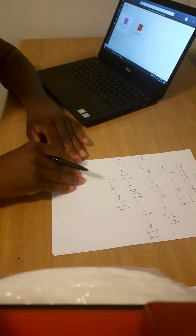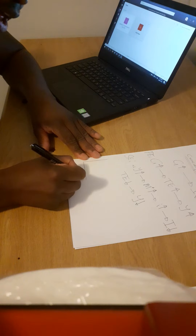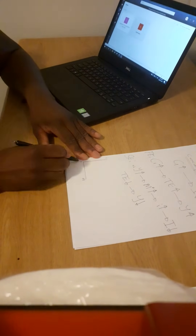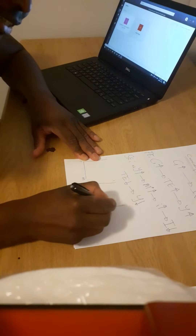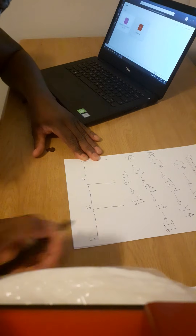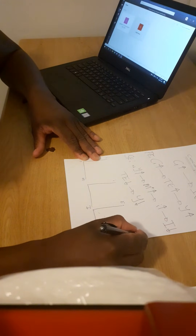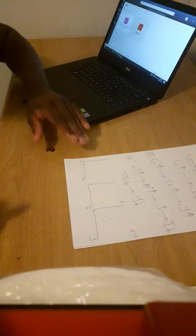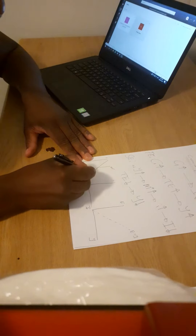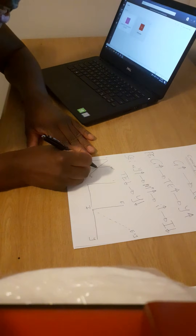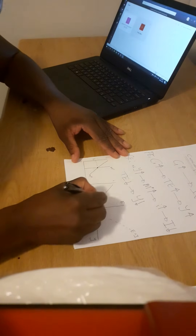Let me draw the diagrams. The first diagram is the money market, with interest rate on the vertical axis. The second is the investment diagram, with interest rate on the vertical axis. The third is the real sector — the Keynesian model — with output and expenditure on the axes, and the 45-degree line where expenditure equals income.